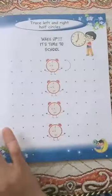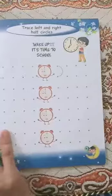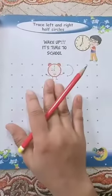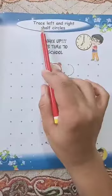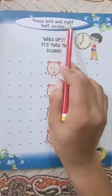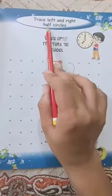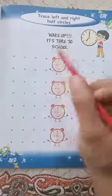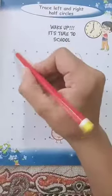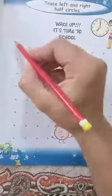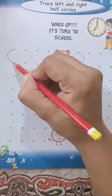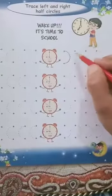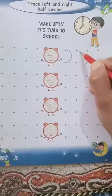Open page number three of this book. On page number three, you have to trace left and right half circles. So you have to trace it like this — these are the left half circles. And on the right side, here are the right half circles.